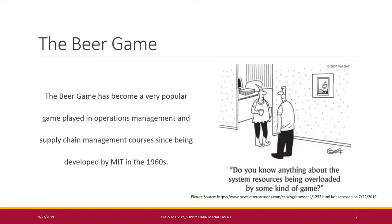The game simulates the flow of product and information in a simple supply chain consisting of a retailer, a wholesaler, a distributor, and a manufacturer. One person takes the role of each supply chain partner in a typical game. A class can be separated into any number of four-person supply chains, each competing against the others.